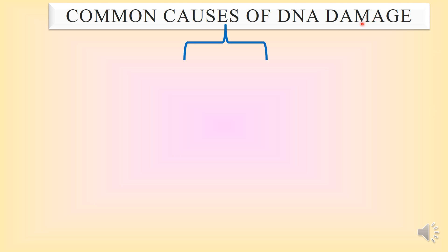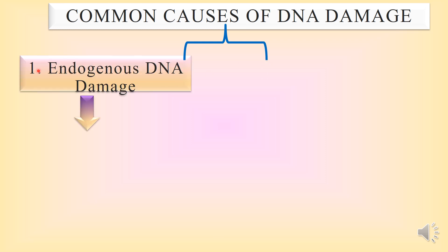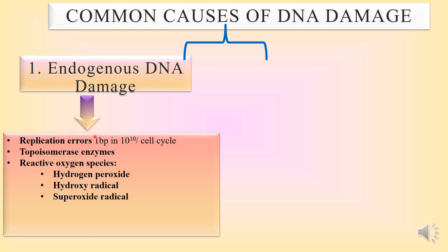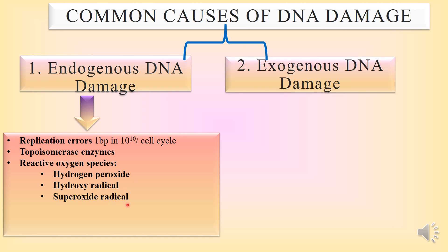Let us look at the common causes of DNA damage. DNA damages are of two types. The first is endogenous DNA damage, which is caused by replication errors — around one base pair in 10 to the power of 10 per cell cycle. Errors may also be caused by topoisomerase enzymes while removing supercoils, and by reactive oxygen species such as hydrogen peroxide, hydroxyl radical, and superoxide radical.